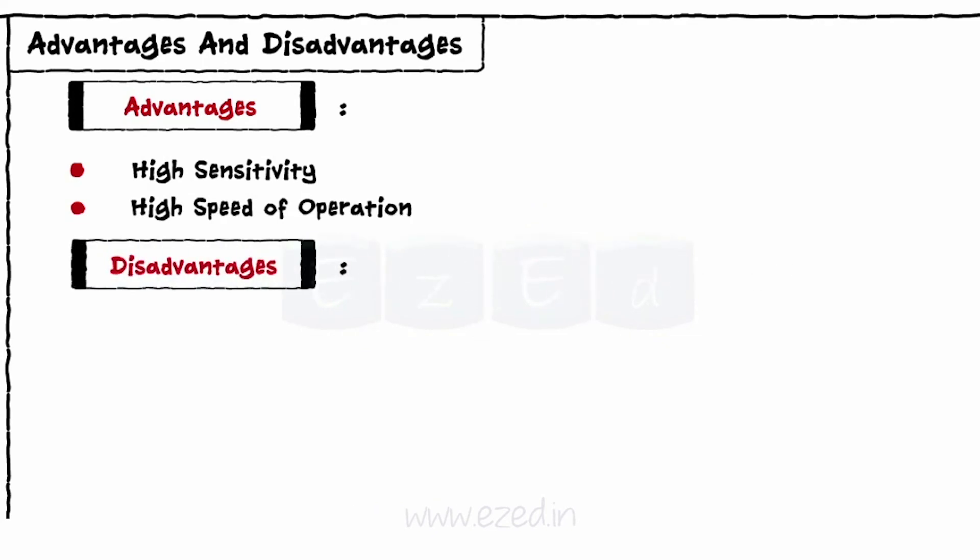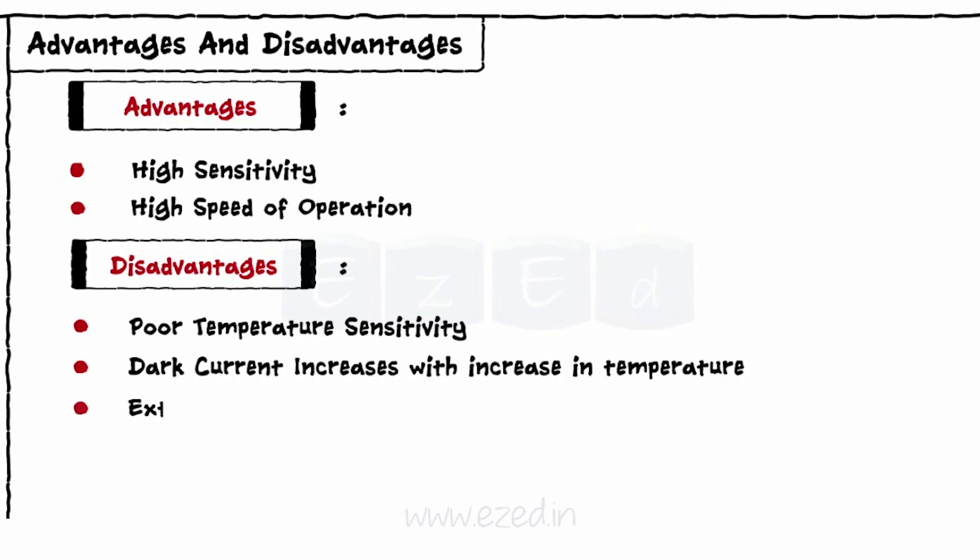Disadvantages of photodiodes are poor temperature sensitivity, dark current increases with increase in temperature, external biasing is required, and amplification is required as output is small.